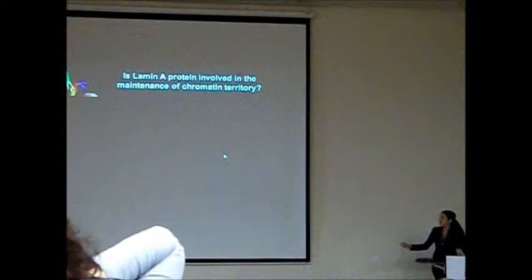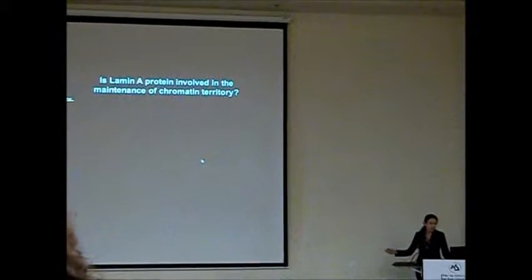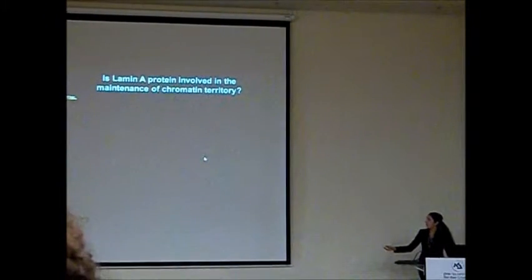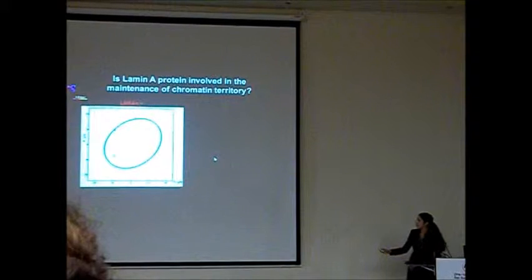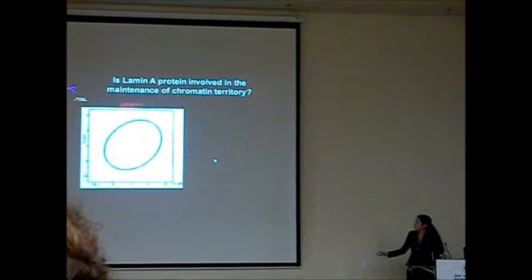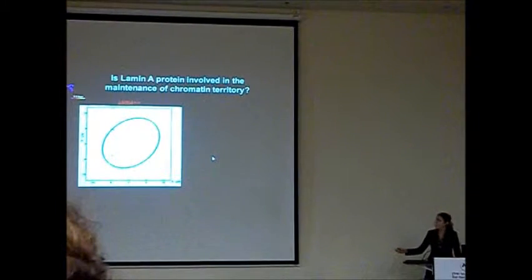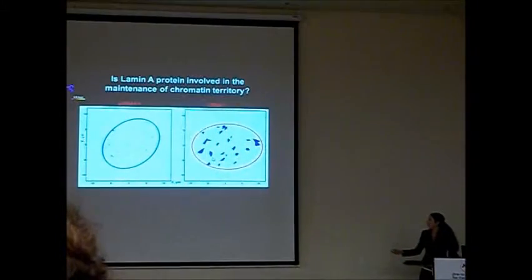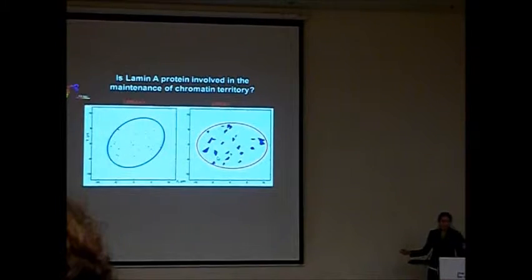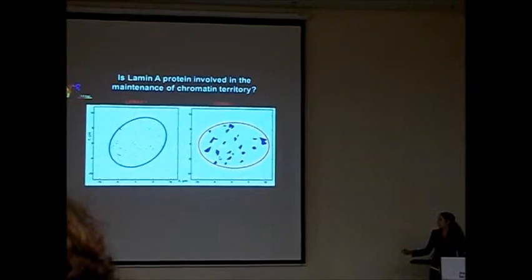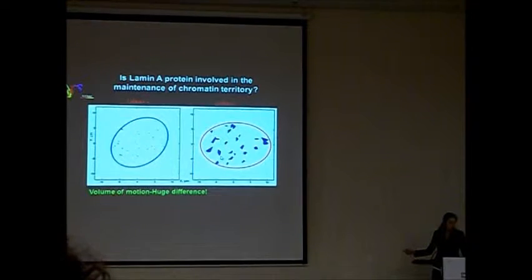So in order to answer the question of our research, if lamin A protein is involved in the maintenance of the chromosome territory, we produced the experiment as I mentioned before. We calculated, first of all, the volume of movement in normal cells. Here you can see the nucleus, and these blue spots are the volume of movement of each telomere during, for example, 20 or 30 minutes in live cells. And then we did the same experiments in cells with lamin A depletion. So these cells do not produce lamin A at all. And also calculated the volume of movement of telomeres. And you can see the huge difference between these two pictures. In cells without lamin A depletion, chromatin is much more free to move.